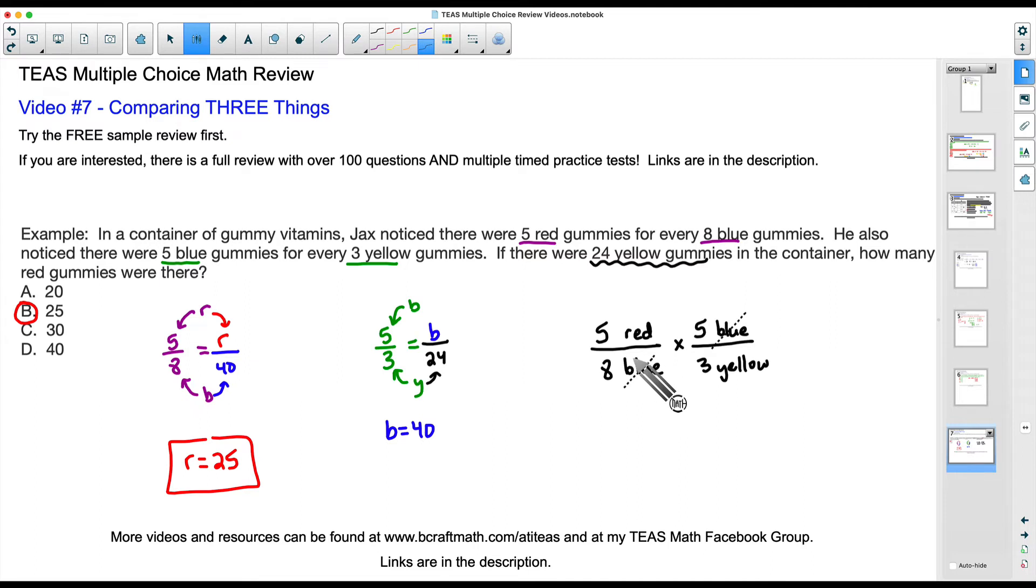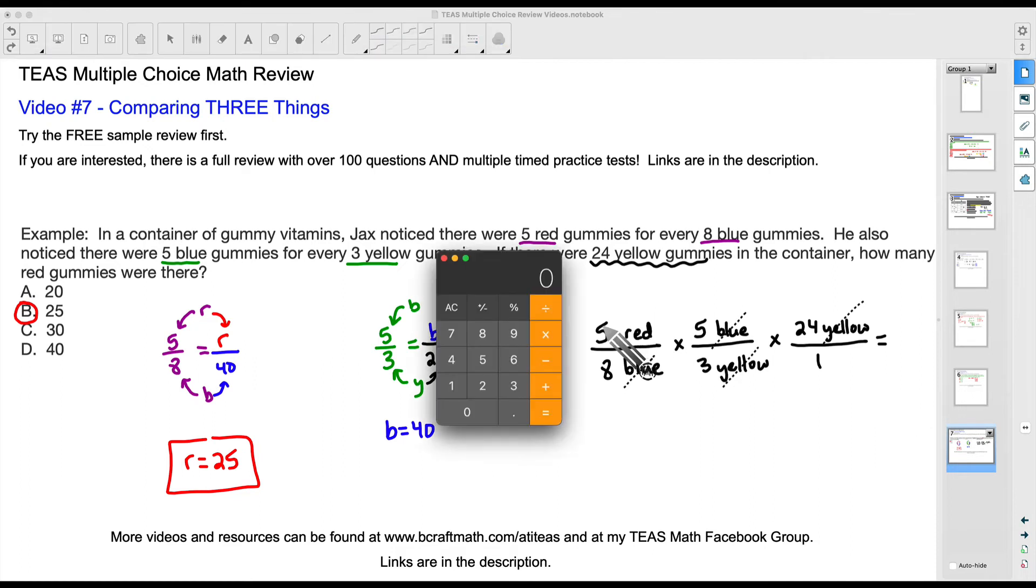So we've gotten rid of the blues, because again, we had one at the bottom, we had one at the top. We can cancel them out. Now, let's do one more fraction. What's another number that we see up here? We see 24 yellow. So 24, and I'm going to put this at the top. Why am I putting that at the top? And I can put this over 1 as well. But again, why am I putting this at the top? We can cancel out the words yellow. The only word we have left is red. So guess what we can do? We can multiply these fractions, and check out how fast we can do this.